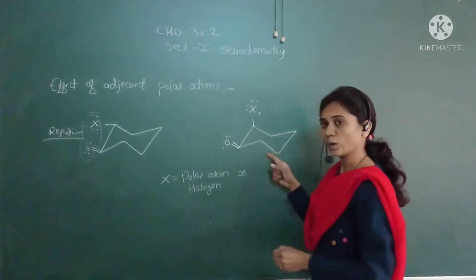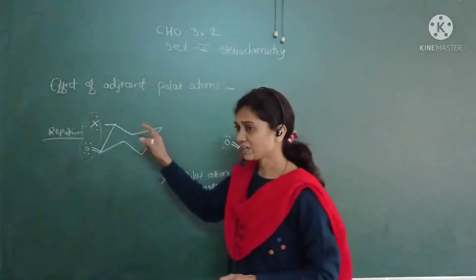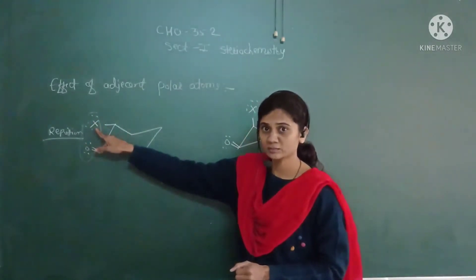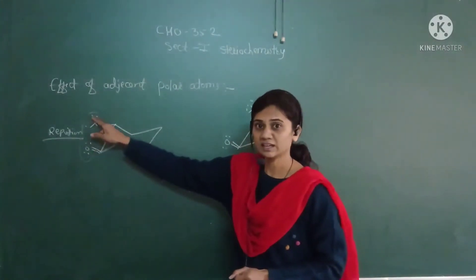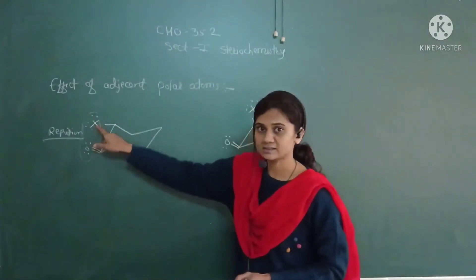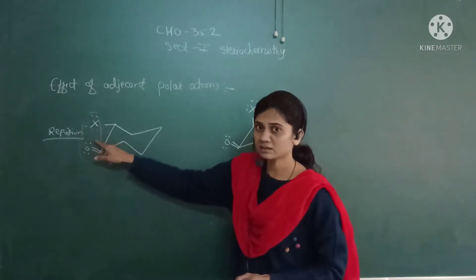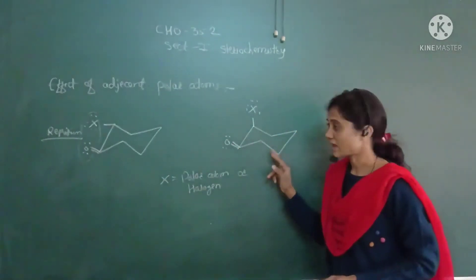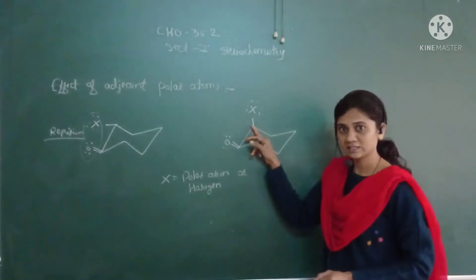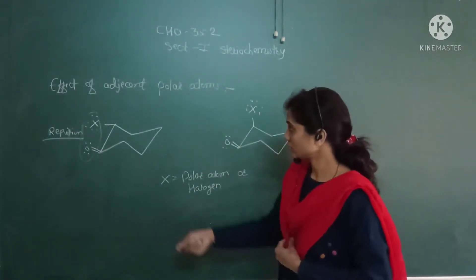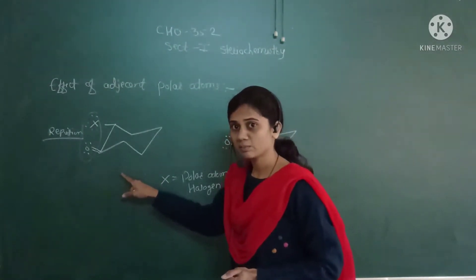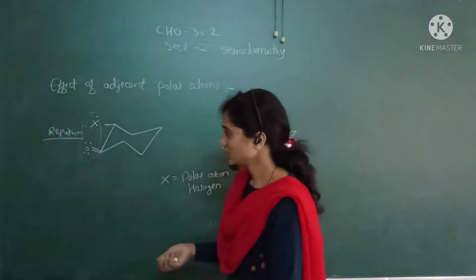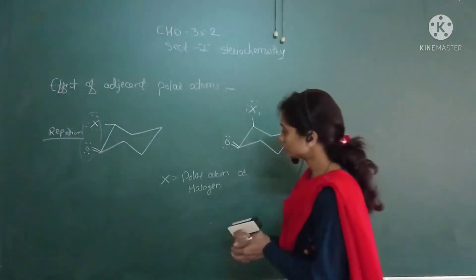Because of this repulsion between the lone pairs of halogen and oxygen, the molecule carries high energy and is unstable. The equatorial halogen or polar atom is therefore unstable. However, the axial halogen is stable because there is less repulsion and it contains less energy. So in this case, equatorial is less stable and axial is more stable.